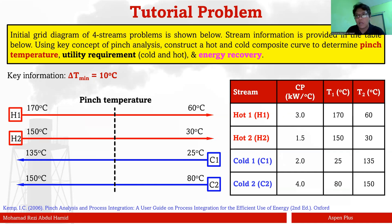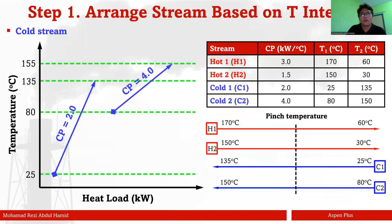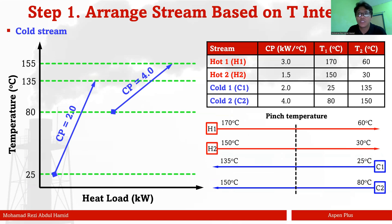Now that we understand the tutorial problem, the next step is to prepare the composite curve — that's the first thing you need to do before finding pinch temperature, utility requirements, and energy recovery. Step one: understand your streams. Get all CP and temperature information for your hot and cold streams. In this case, I'm going to prepare my cold stream first.